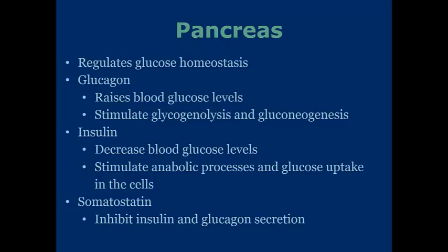The pancreas regulates glucose homeostasis by observing glucose concentrations and adjusting them to maintain optimal function. This is done via glucagon and insulin. Glucagon raises blood glucose levels and stimulates glycogenolysis and gluconeogenesis. Insulin does the opposite, so these two hormones are antagonists to each other. Insulin decreases blood glucose levels and stimulates anabolic processes and glucose uptake in the cells. If you're diabetic, your body has difficulty uptaking glucose, which is why insulin injections are needed.